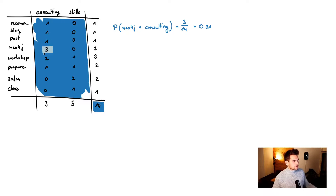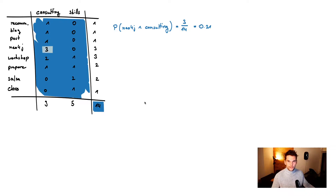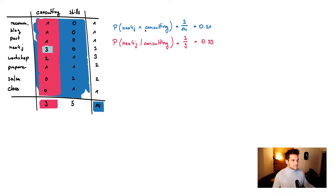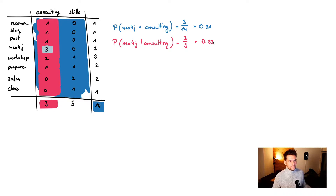Using this table we can find some basic probabilities. For example, the probability for seeing 'Neo4j' and 'consulting' — that's 3 over 14, since three assignments are Neo4j in the area consulting out of 14 total. We can also calculate conditional probabilities. For example, given the area 'consulting', what's the probability for seeing the term 'Neo4j'? We select only the consulting subset, so 3 over 9, which is a probability of 0.33.